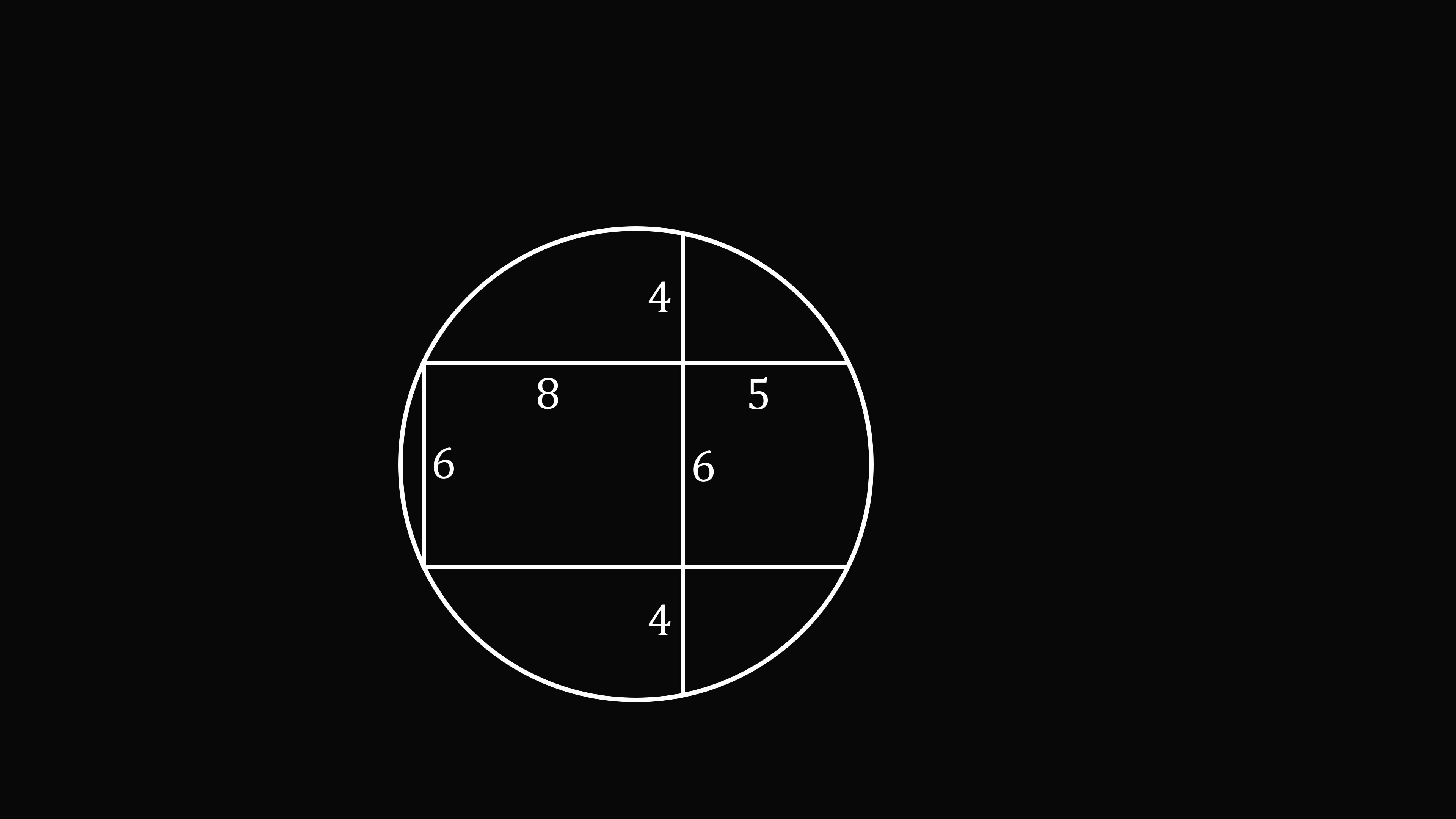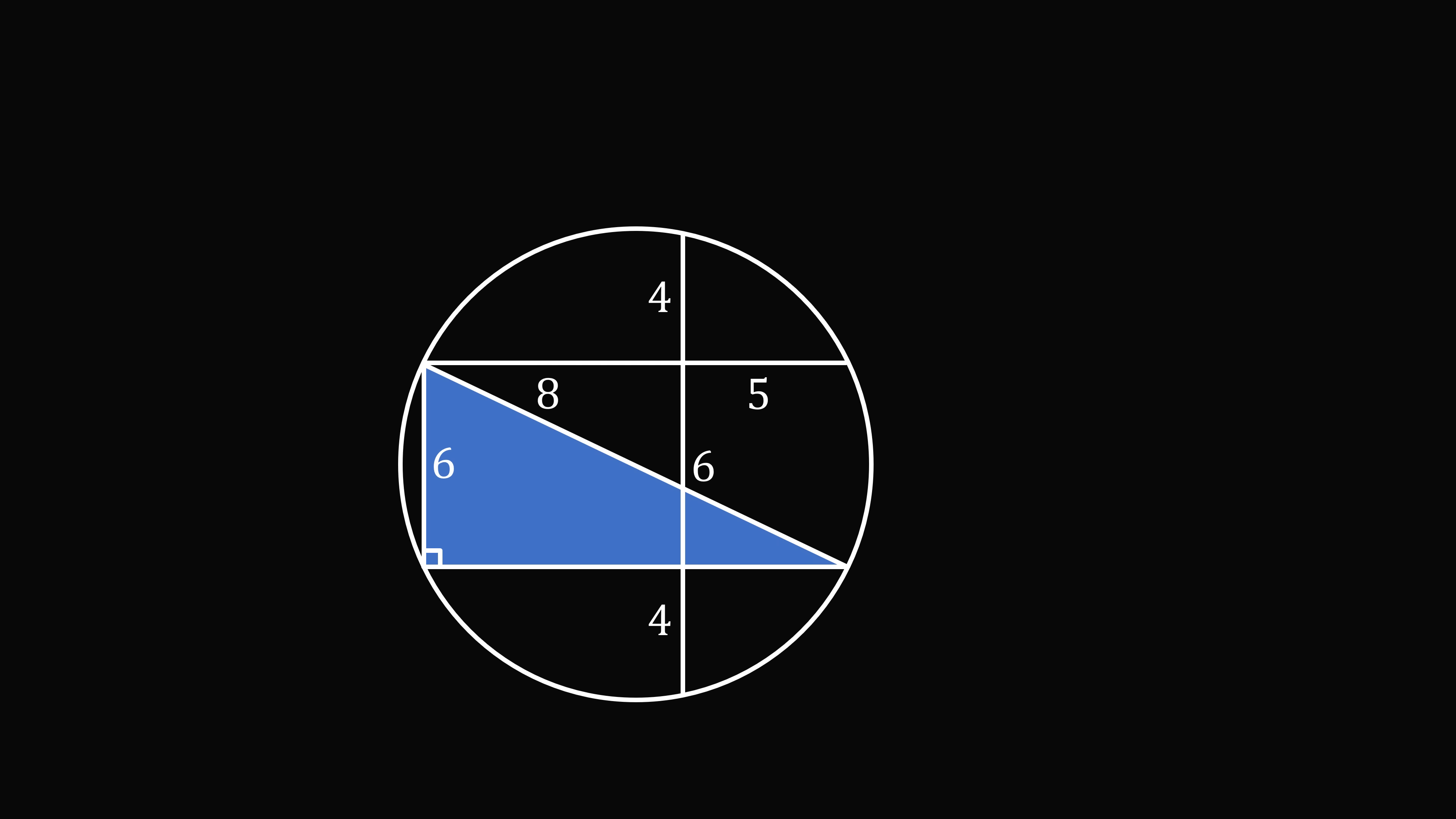Now, since we have a rectangle, we have a right angle here, and that means these two chords will subtend the diameter of the circle. So, this chord will be a diameter of the circle, and its length will be equal to 2r.